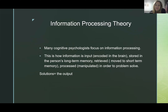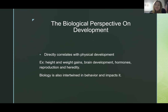Next, we'll talk about information processing theory. Many cognitive psychologists focused on information processing — how information is input or encoded into the brain when we learn, stored in a person's long-term memory, retrieved and moved to short-term memory, and then processed or manipulated in order to solve a problem, with the solutions being the output. Then we have the biological perspective on development, which directly correlates with physical development — examples include weight gain, height increase, brain development, hormones, reproduction, and heredity. Biology is also intertwined in behavior and what impacts it.